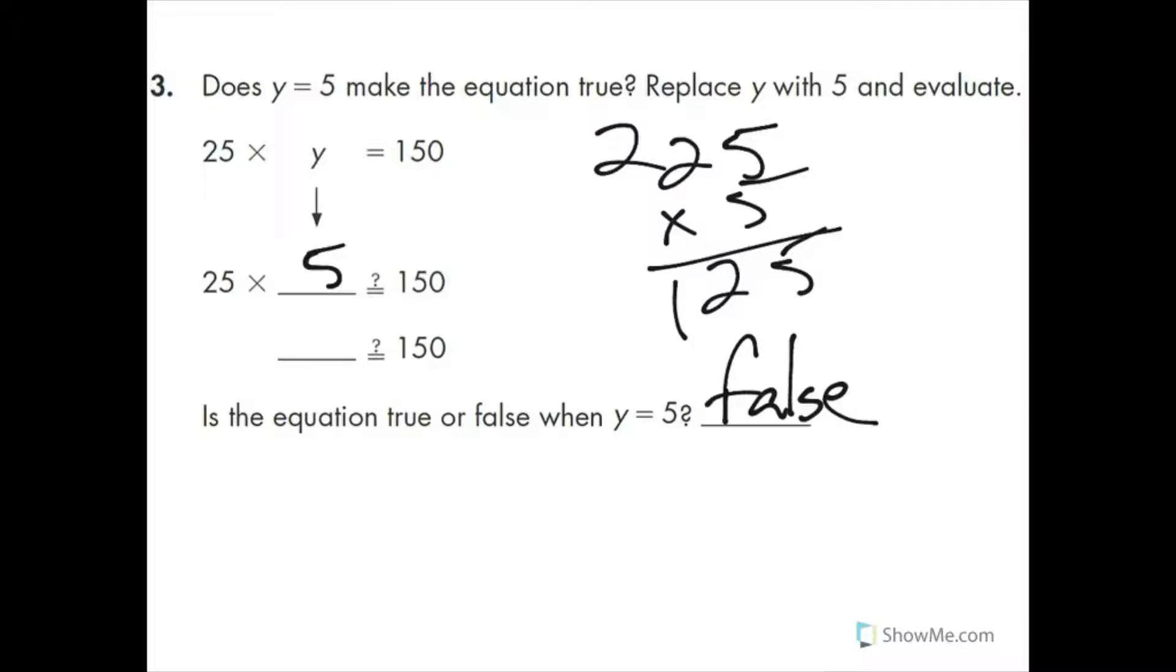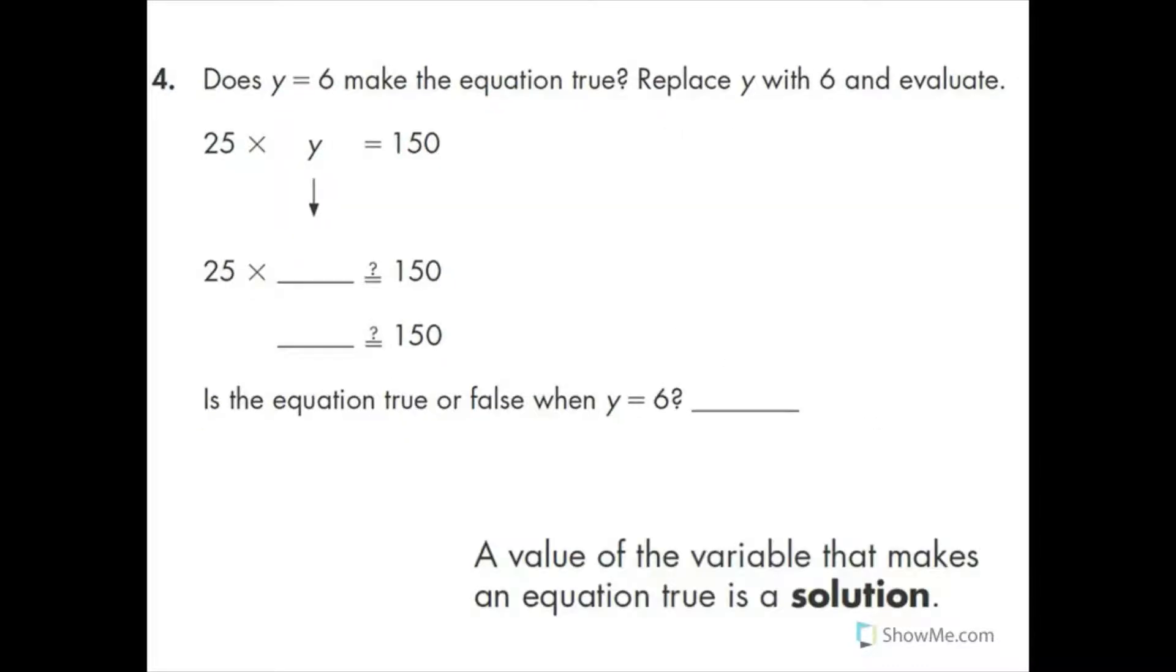You know, 125 doesn't equal 150. So it's false. Well, number four, does y equal 6 make the equation true? So replace y with 6. And if we did that, 6 times 25 is 150. So is the equation true or false when y equals 6? It is true. So a value of the variable that makes an equation true is a solution. It solves it. That's the solution.